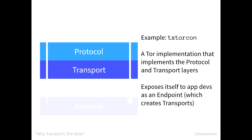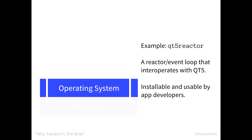Twisted lets you opt in to the separate layers. For example, there's a thing on PyPI called TX TalkOn. It implements the protocol and transport layers and exposes itself as an endpoint, which is sort of like a transport factory. What that means is that you can write a protocol — maybe a custom one, or just use an out-of-the-box SSH one — and pretty much effortlessly host it on the Tor network, because you only care about the top layer: the business logic and the protocol. You can just plug in the transport that TX TalkOn provides. As another example, there's a bit of software called Qt5 Reactor, which is a reactor or event loop that interoperates with Qt5, letting you write Twisted applications that use Qt's event loop. It's just pip-installable and really easy to plug in, and all of the layers up top don't have to care about it.